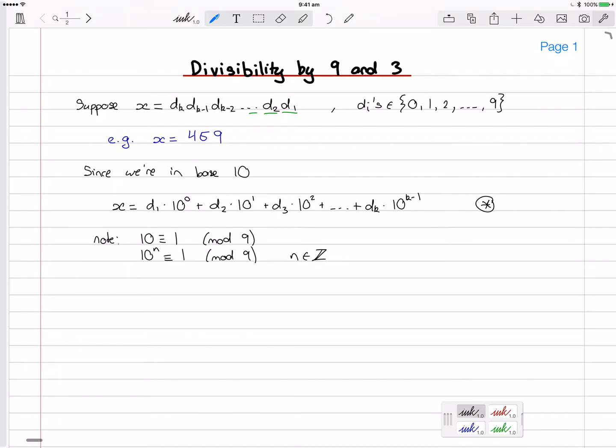So any power of 10 should also be 1 because it's really just instead of, for example, 10 squared, that would be 10 times 10, but 10 is equal to 1. So it's 1 times 1 mod 9, which is of course 1.